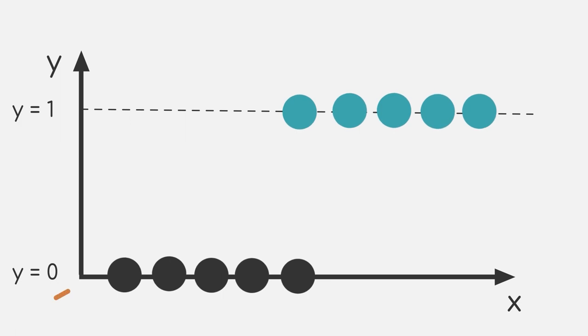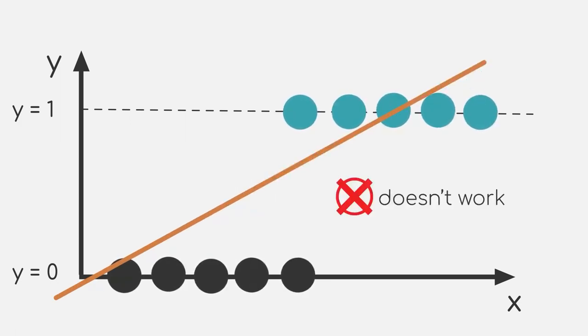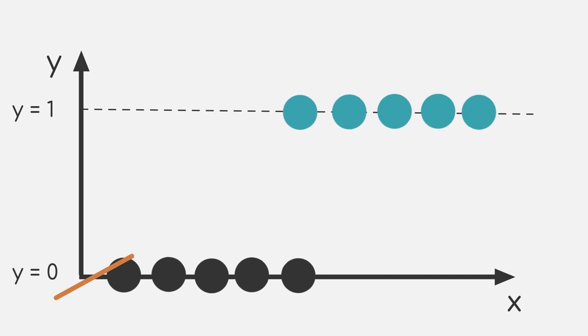As you can clearly see, the relation cannot really be described using a linear function, at least in a meaningful way. This is where logistic regression comes into play.